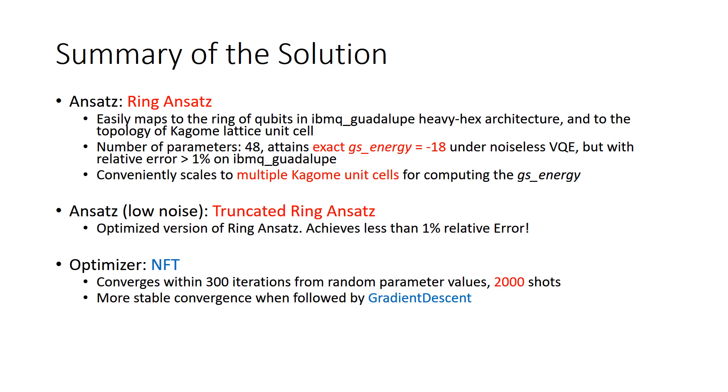NFT is the optimizer and it converges to the lowest ground state energy value, that's minus 18, within 300 iterations, that's maximum iteration parameter. And on the real IBM Q Guadalupe chip, 2000 shots are sufficient. We can achieve a more stable convergence when the optimizer NFT execution, once complete, is followed by the gradient descent.